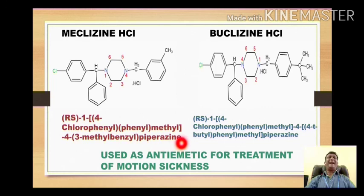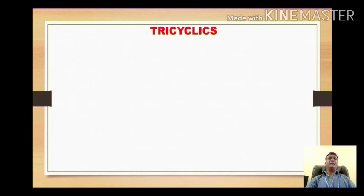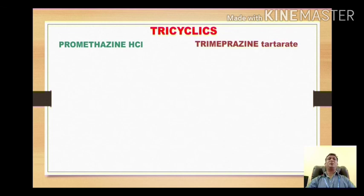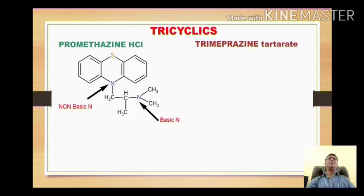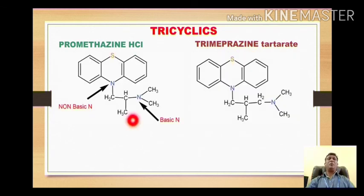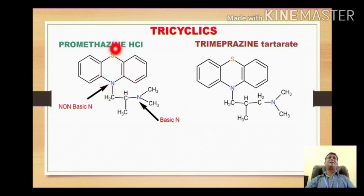The next drugs belong to the category of tricyclics. First we will go for the phenothiazine derivatives: promethazine hydrochloride and trimeprazine tartrate. Both compounds possess this heterocyclic ring — the ring consists of three rings where two benzene rings are attached with the central six-membered thiazine ring. That is why the basic heterocycle is called phenothiazine.